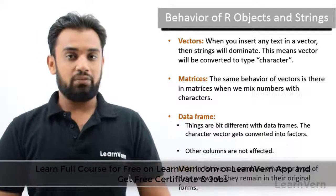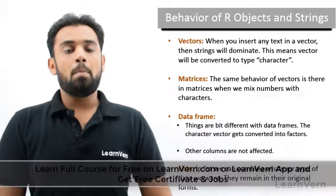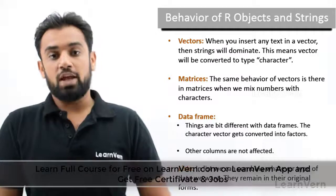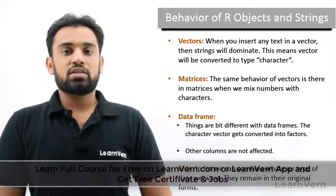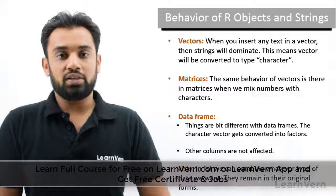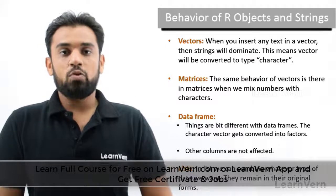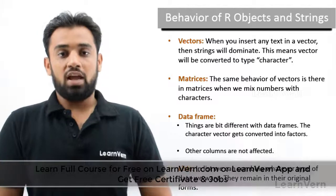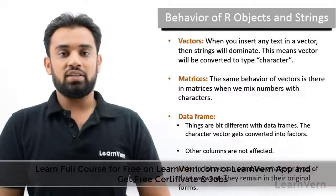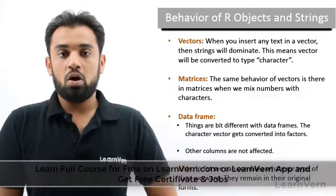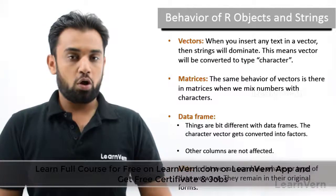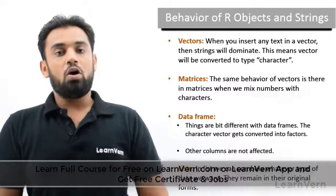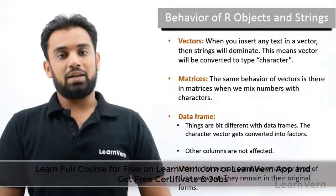This is not the case with data frames and lists. In data frames you have multiple columns — one column can be numeric and another can be character, and the character column cannot impact the numeric column. However, if you have, say, a hundred rows and in one column you have 99 numeric elements and one character element, that entire column will be coerced to character. You need to handle this before doing data manipulations.